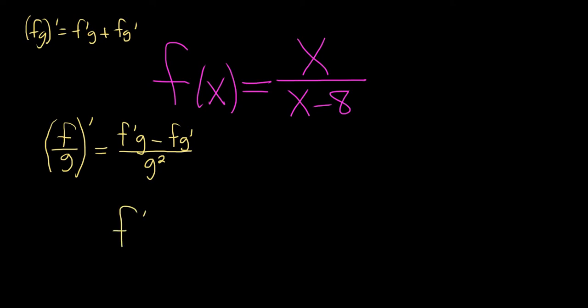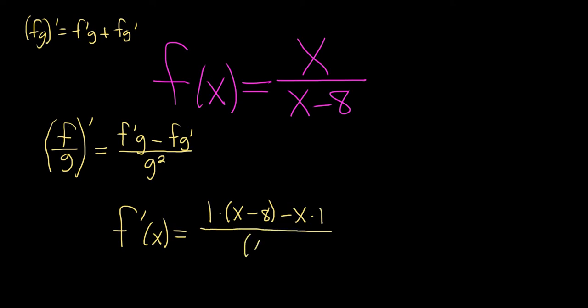So f prime of x: it's the derivative of the top piece, which is 1, times the bottom piece, which is x minus 8, minus the top piece, which is x, times the derivative of the bottom, which is just 1, all over the bottom piece squared.